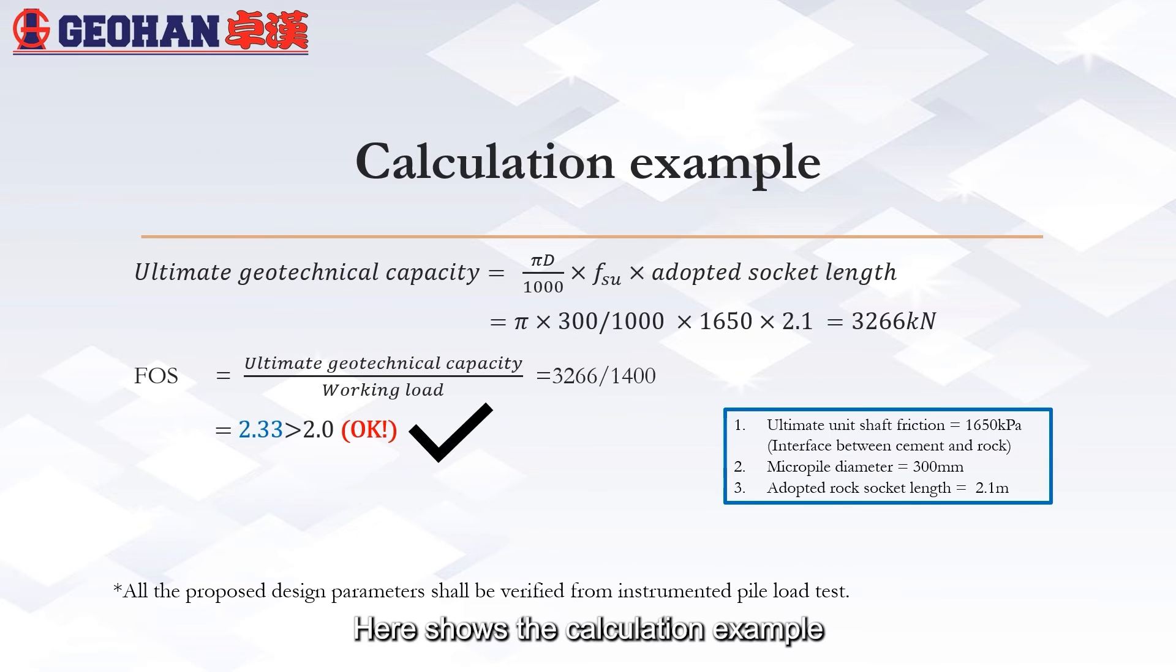Here shows the calculation example. The ultimate unit shaft friction between cement and rock is 1650 kPa. The adopted rock socket length is 2.1 meter. As the FOS obtained is higher than 2.0, it is said to be passed.